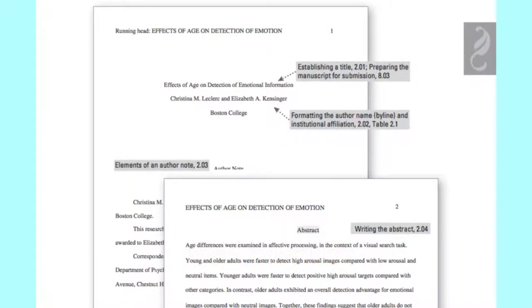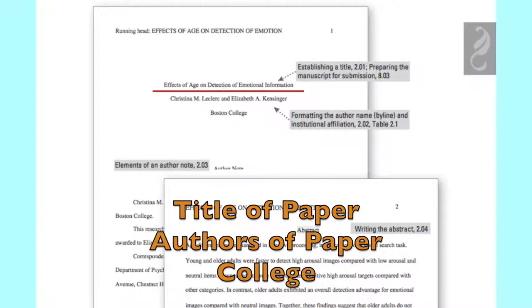Next, on the upper half of the page, you're going to list the title for the paper, the authors for the paper, and then the institutional affiliation. In this case, it would be Polk State College.